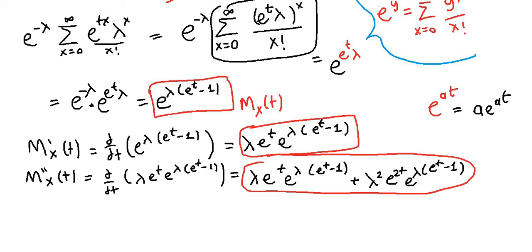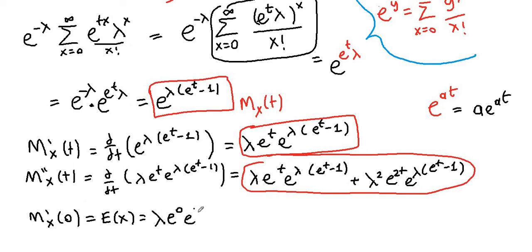We know that plugging in t equals 0 into the first derivative of the moment generating function gives us the expectation. So wherever we see t, we plug in 0. Here, e to the 0 is 1, so 1 minus 1 is 0, and e to the lambda times 0 is e to the 0, which is 1. So we obtain lambda. The expectation of the Poisson distribution is lambda.